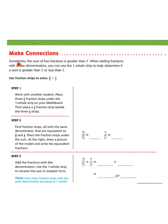It says sometimes the sum of two fractions is greater than one. When adding fractions with unlike denominators, you can use the one-whole strip to help determine if the sum is greater than or less than one. So now we're going to solve three-fifths plus one-half. We don't have the fraction strips, so we're just going to work through this step by step.